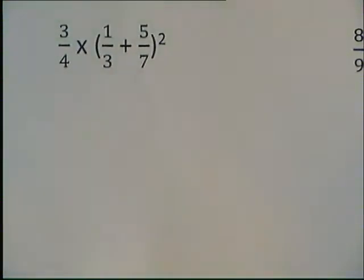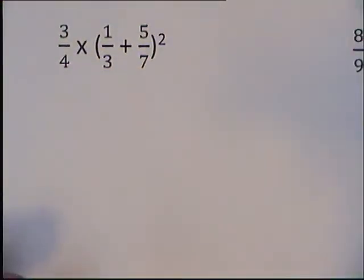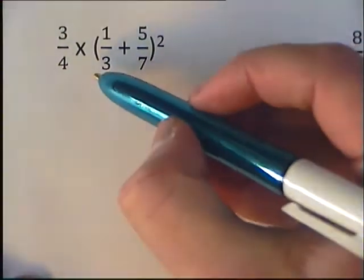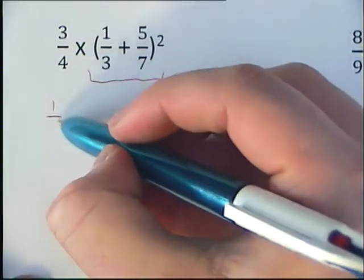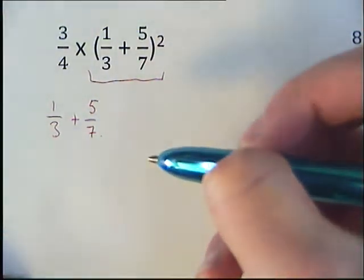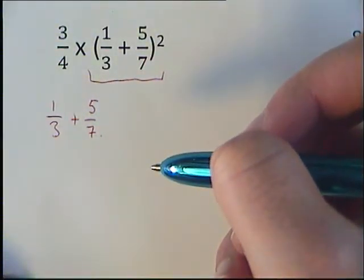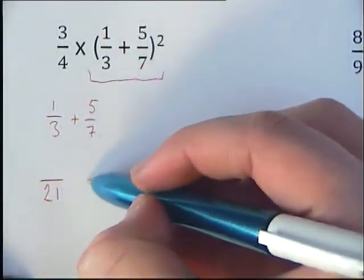Question 3 is slightly trickier. It requires us to do a little calculation before we start squaring things. We're going to deal with what's in our bracket first, so we've got 1/3 plus 5/7. We're going to add them together. The denominator is going to be 21 because that's our common multiple.